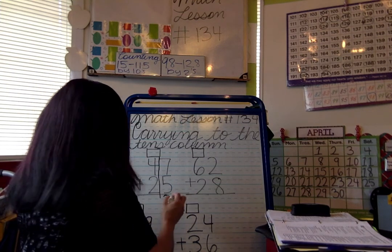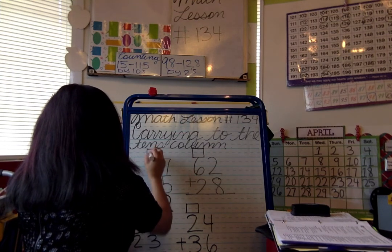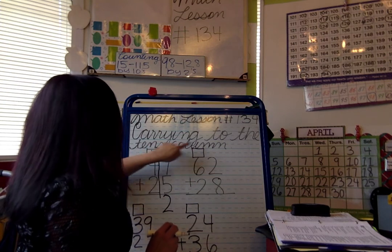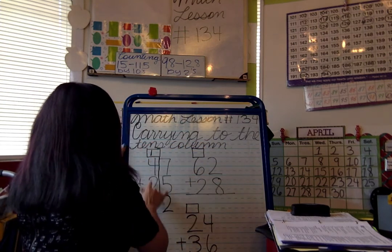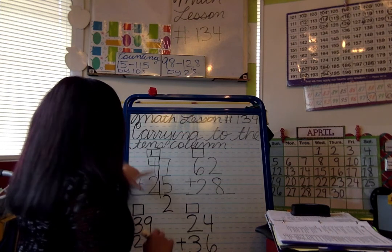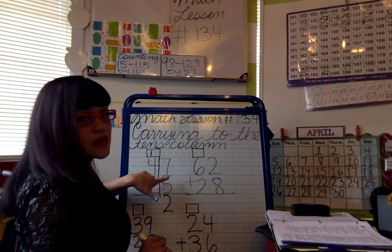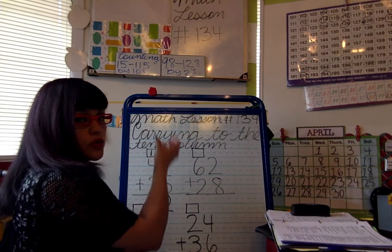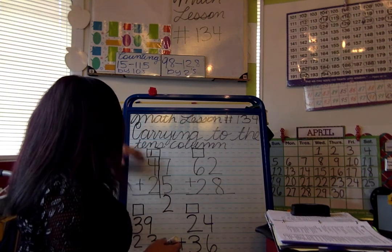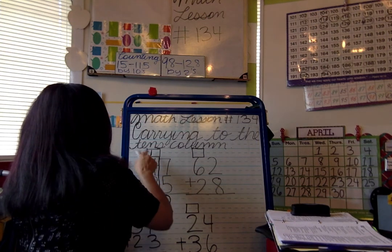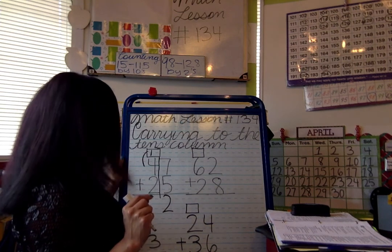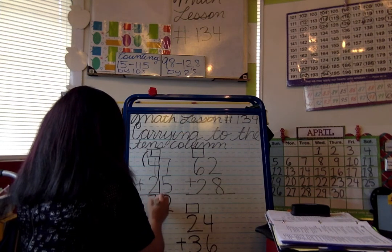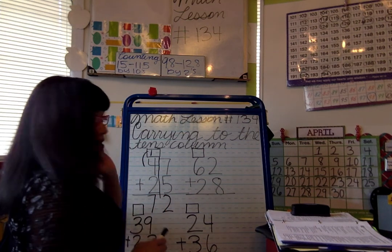Your one needs to go over here — it becomes part of the addition problem on the tens side. This is what 'carrying to the tens column' means. Anytime your sum is larger than ten, you carry that digit to the tens place. So what is four plus one? Five — correct! And five plus two? Seven — correct! Your answer is 72.